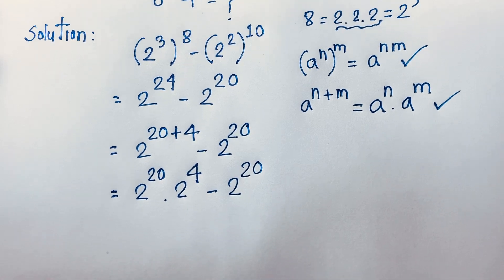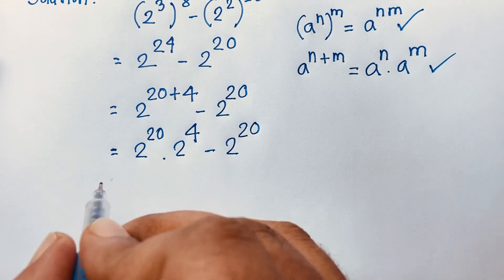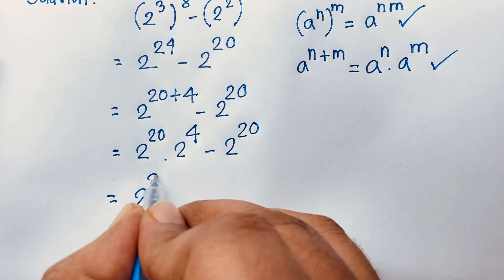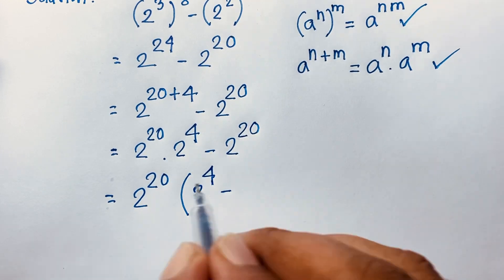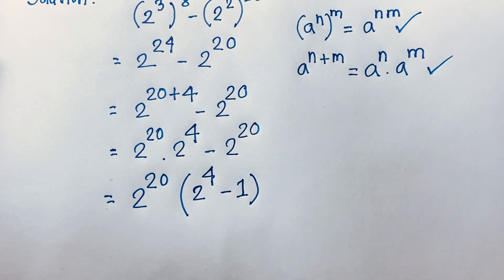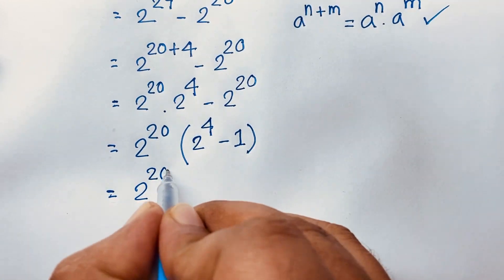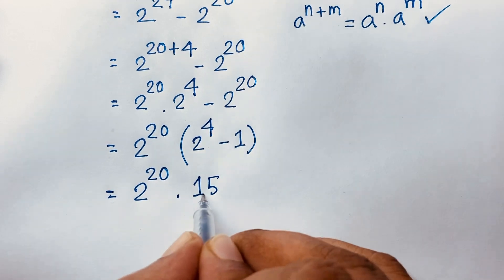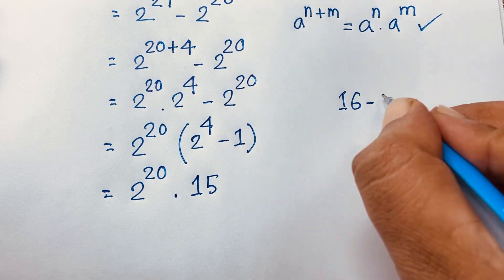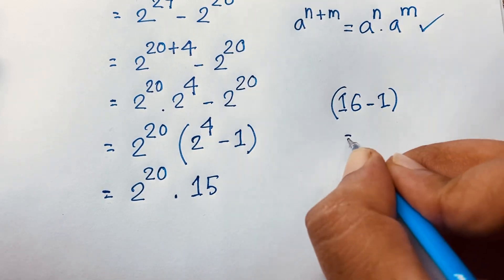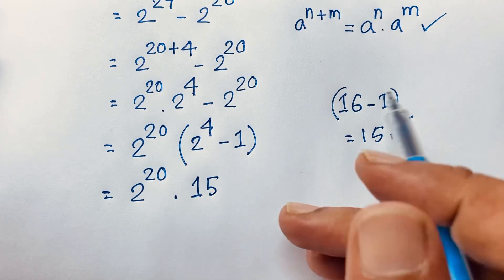Now I can see that 2 to the power 20 is common in both terms, so I factor it out. The expression becomes 2 to the power 20 times (2 to the power 4 minus 1). Since 2 to the power 4 equals 16, we get 16 minus 1 equals 15. So the expression simplifies to 2 to the power 20 times 15.